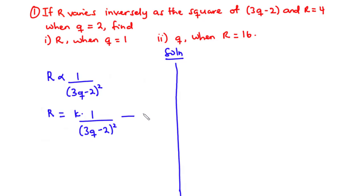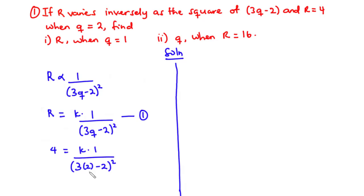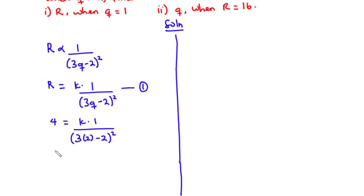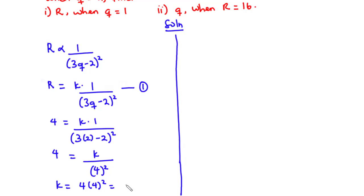So that is r equals k times 1 over the square of (3q minus 2). Let's call this equation 1. Next, we are going to substitute the values of r and q into this equation so that we find the value of the constant k. So we have r to be 4, so 4 equals k times 1 divided by (3 times 2 minus 2) squared. So we have 4 equals k divided by (6 minus 2) squared, that is 4 squared, which is 16. Therefore k equals 4 times 16, which is 64.